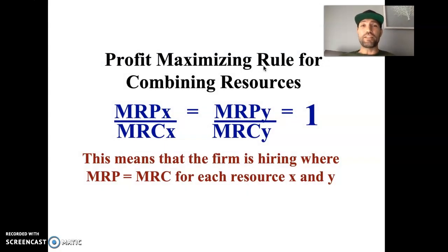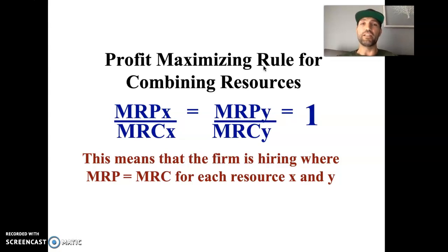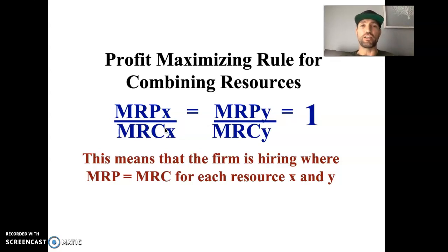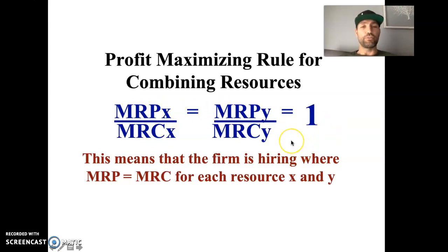Before guided practice, let's look at what we do if we know the price of the product these factors are producing. If we know the price in the product market — not just the hiring cost in the factor market — we can profit maximize our combination of resources. We take the marginal revenue product and the marginal resource cost of each factor and set them equal to each other. The ratio of marginal revenue product to marginal resource cost for each factor should equal one and equal all other such ratios.